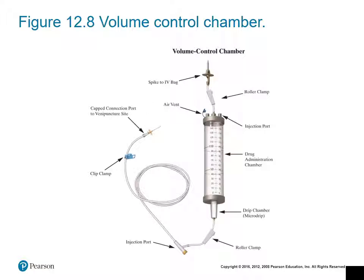Many times with pediatric medications, a volume control chamber or VCC is used to administer medication because it avoids fluid overload. The VCC is calibrated in 1 milliliter increments with a capacity of 100 to 150 milliliters, and can be used as a primary or secondary line. Medication is added to the top injection port, then fluid from the IV bag is added to dilute it. Once the infusion is complete, additional IV fluid is added to flush any remaining medication — consult your facility for the specific flush amount.